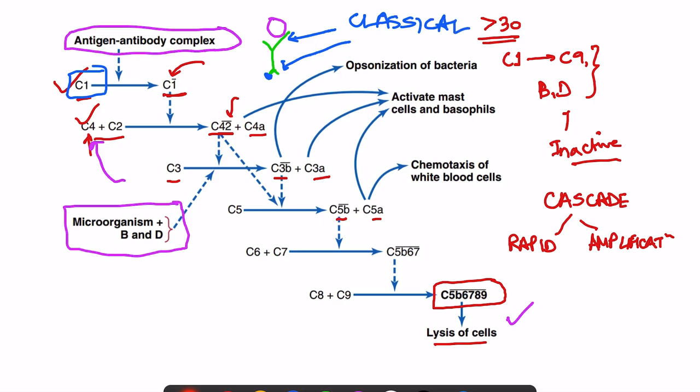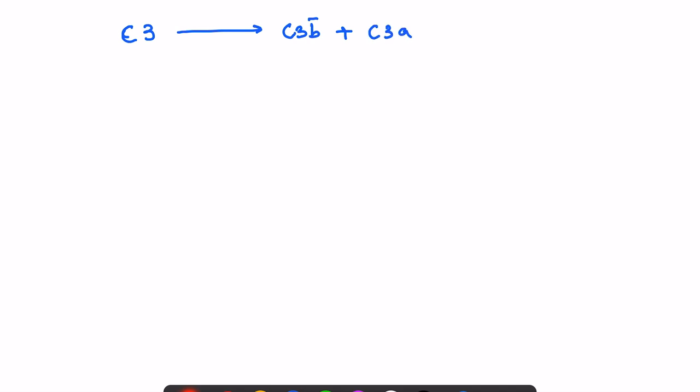In the alternate pathway, the protein C3 spontaneously — and very slowly — converts into C3B and C3A without any external stimulus. However, this C3B needs to bind to a microbial surface for further activation. If a microbe is present in the vicinity, C3B binds to its surface.